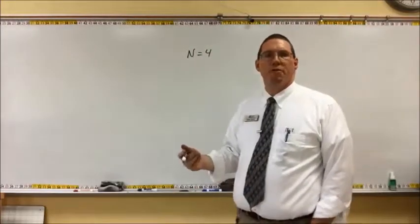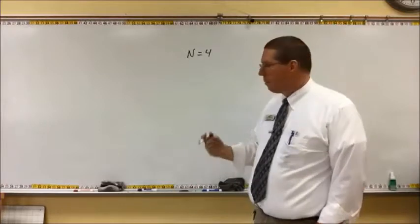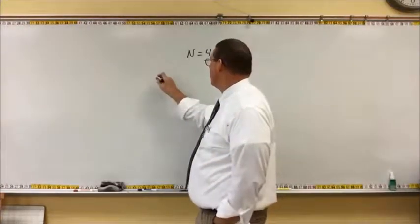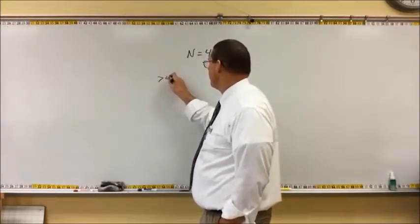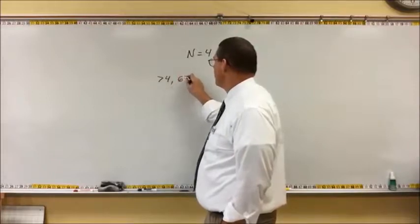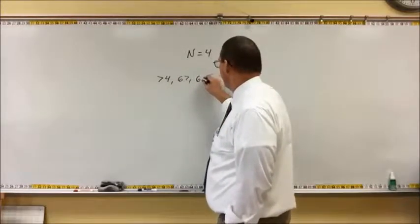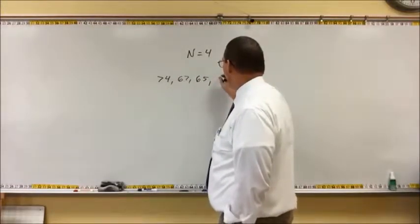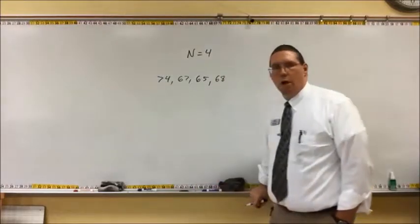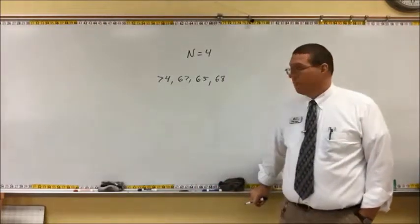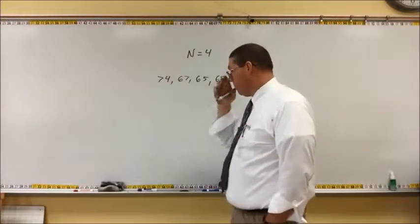Let's say we measured the heights of these four people. Their heights are: somebody who's 74 inches tall, somebody who's 67 inches tall, somebody else is 65 inches tall, and somebody else is 68 inches tall. So these are the heights of the four people.